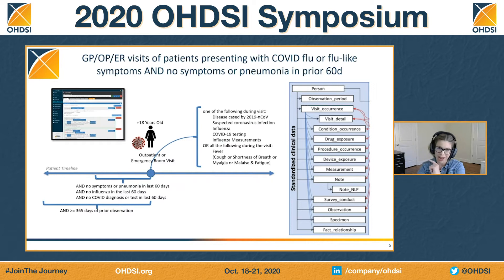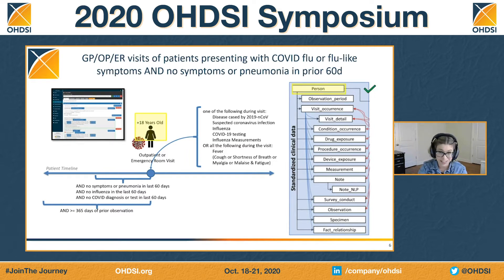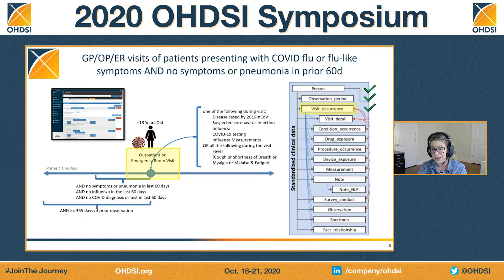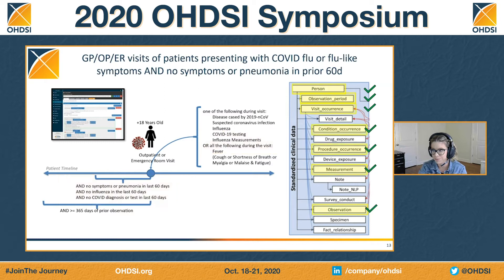Now, while phenotypes might be the backbone of doing studies, ultimately you need data. So how does this phenotype translate to the common data model? If you want to know somebody's 18 years or older, you need the person table. If you want to know how much time somebody has in the database, you need the observation period table. If you want to know the visit types — outpatient, ER — you need visit occurrence. And of course you need conditions, procedures, measurements, and observations. So just this one phenotype, we basically need all the tables in the CDM, which means if we're thinking about an ETL process, we have to think about the whole thing, not just a select few tables.